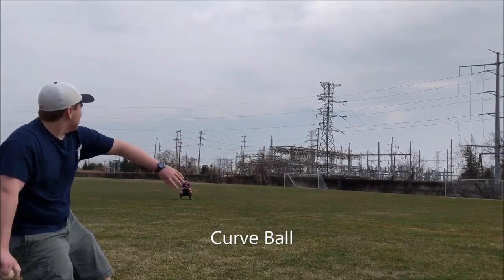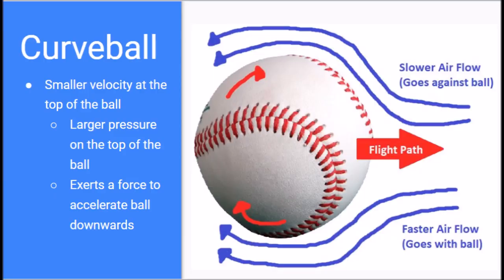Notice how the curveball drops much more as it travels to the plate. A curveball rotates in the opposite direction of a fastball, so the air flows faster on the bottom than it does on top.